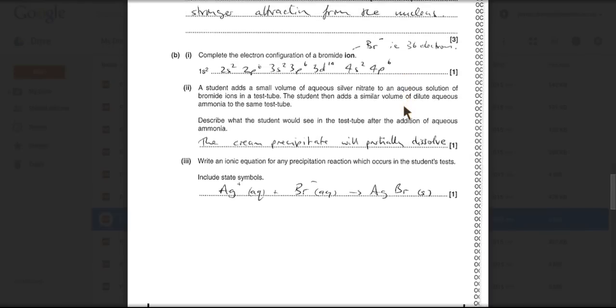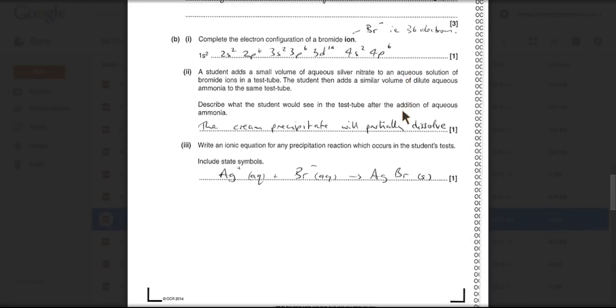The next part of the question, little twist at the end. So the student's got a test tube with some bromide ions in and they add silver nitrate. But then they automatically add a similar volume of dilute aqueous ammonia. So the question's asking, what will the student see at the end of all of that?